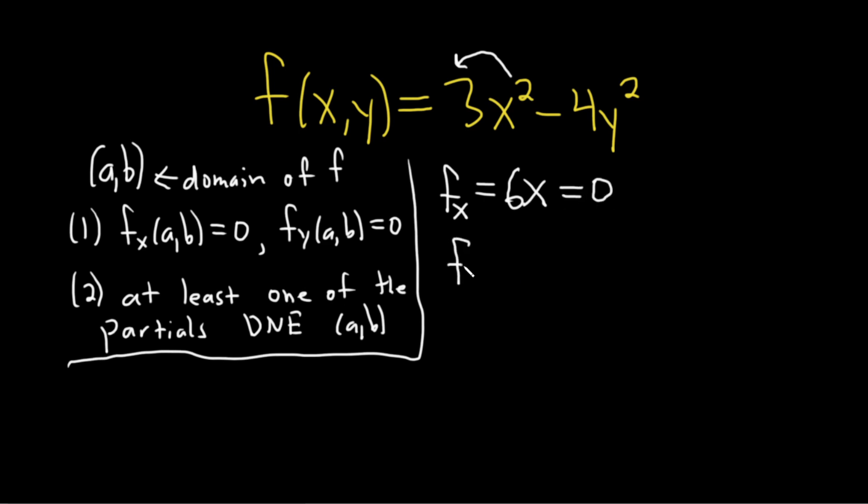And we have to set the other partial equal to zero, so f_y. When we're computing partial derivatives with respect to y, we treat all other variables as constants. In this case, the derivative of 3x² will simply be zero. And here we'll use the power rule. This will give us negative 8y. And we want to set this equal to zero.